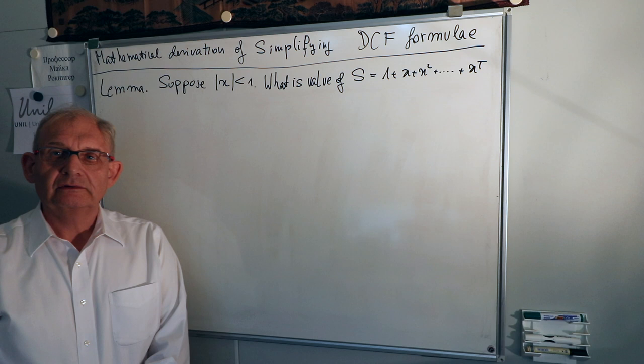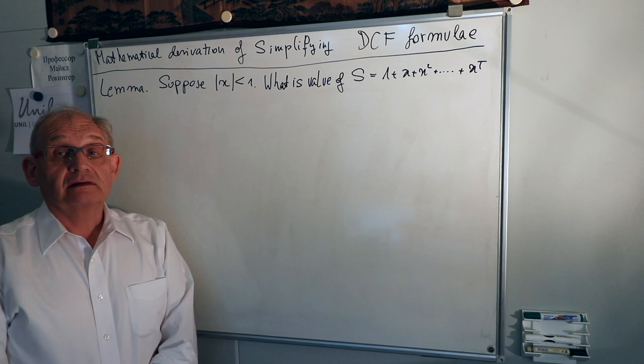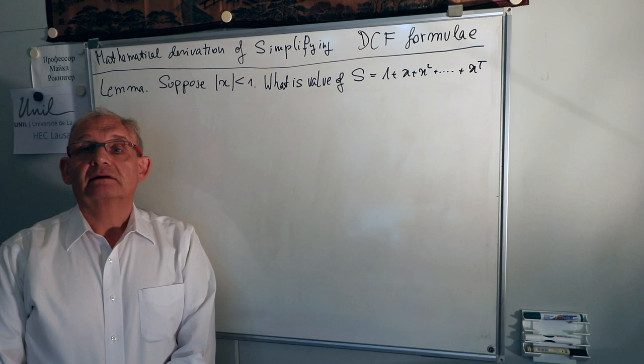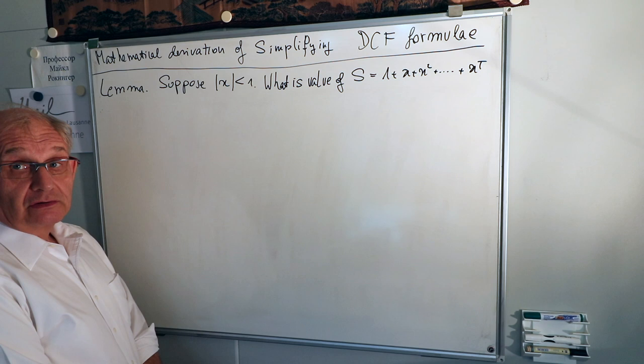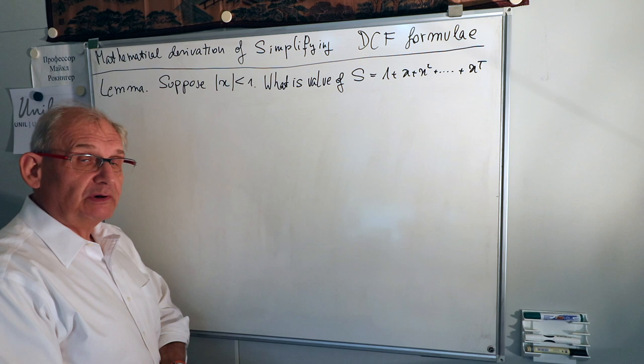What I'd like to do now is to derive the simplifying discounted cash flow formulas by using algebraic arguments. This is something that very often students really struggle with. The algebra is essentially going to be based on a little lemma, which means there are going to be some preparatory simplifying computations that we are going to apply over and over again.